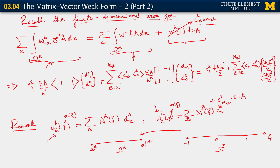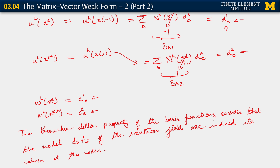I needed to say all of this because it is what we are using here — in particular to make the identification of w_h at L being equal to c_2 for element NEL. This is the reason we are able to do that.